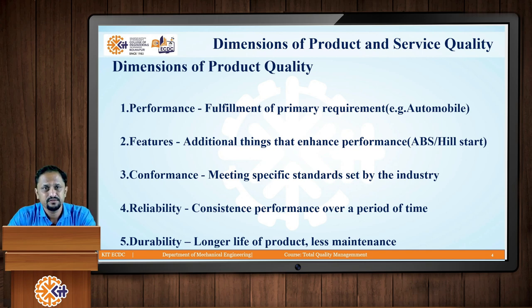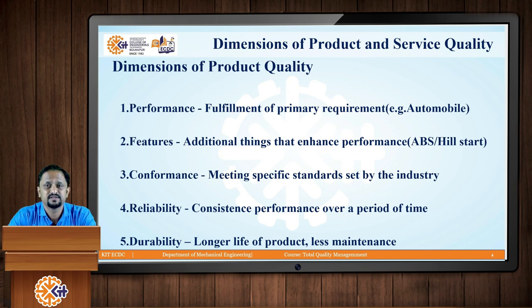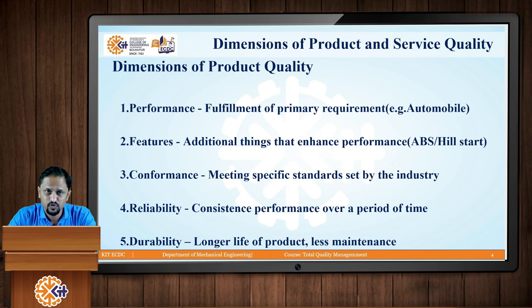The next dimension is feature — additional things that enhance performance. Taking the same example of an automobile, you can have an anti-lock braking system or hill start assistance. These are additional features that enhance the performance of your product. These additional things which are enhancing the performance of your product are called features.